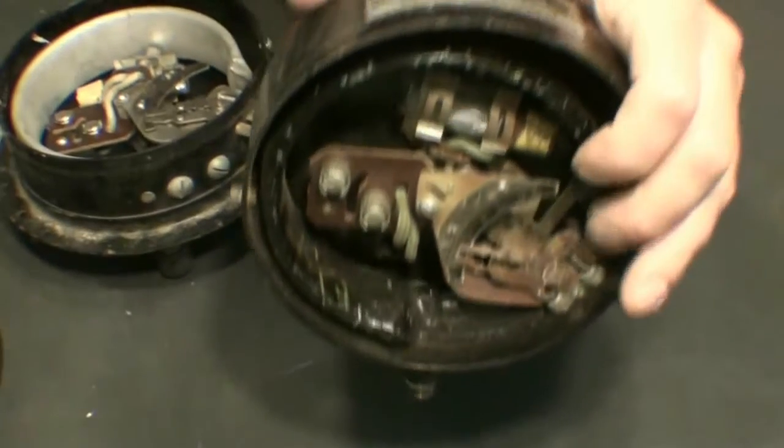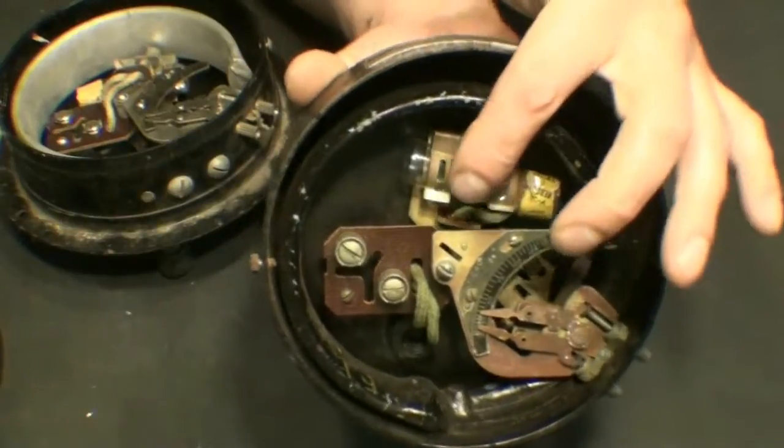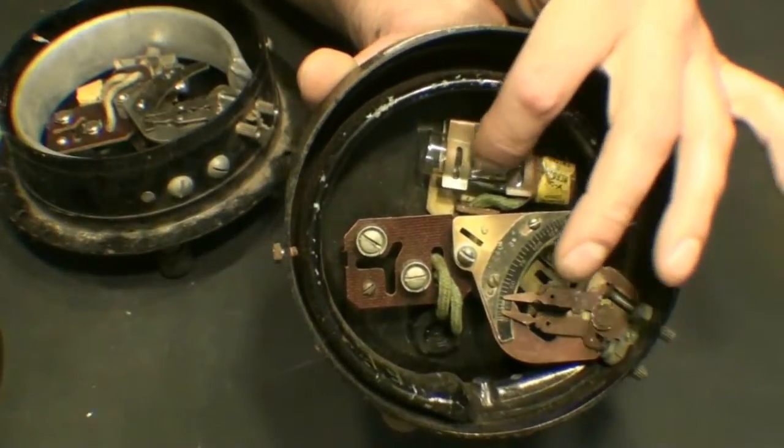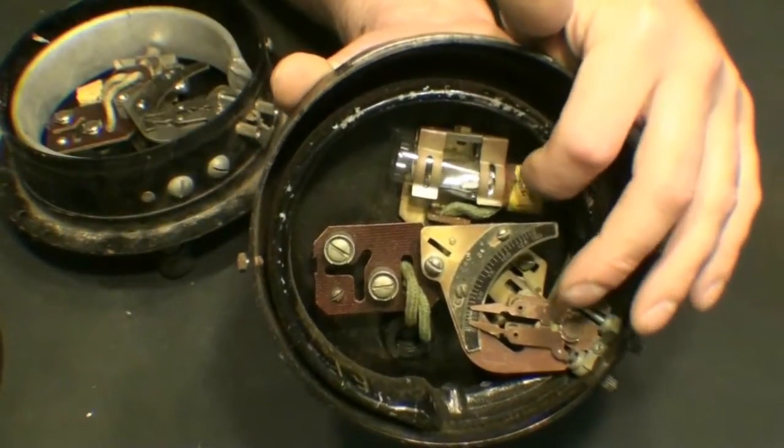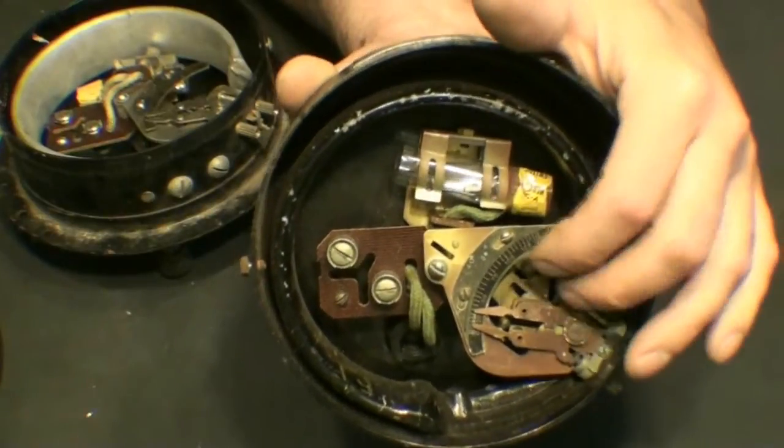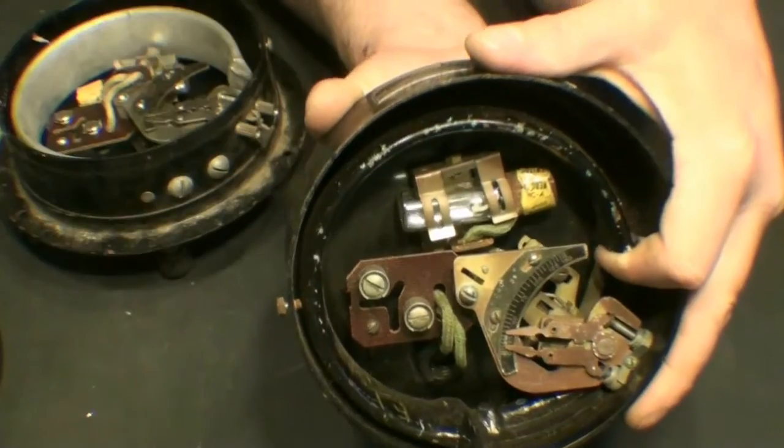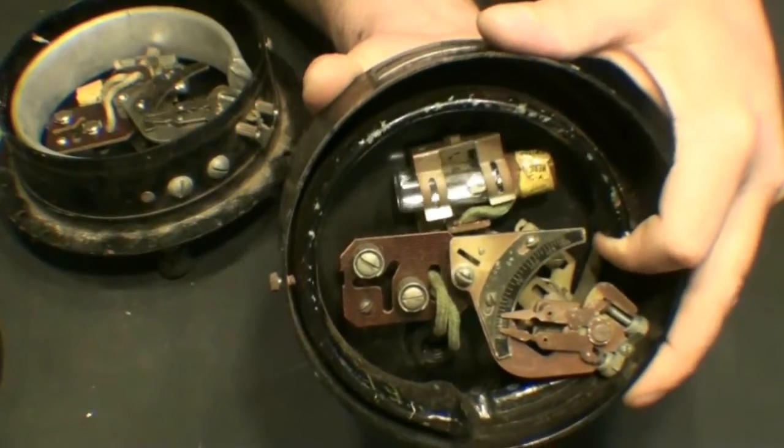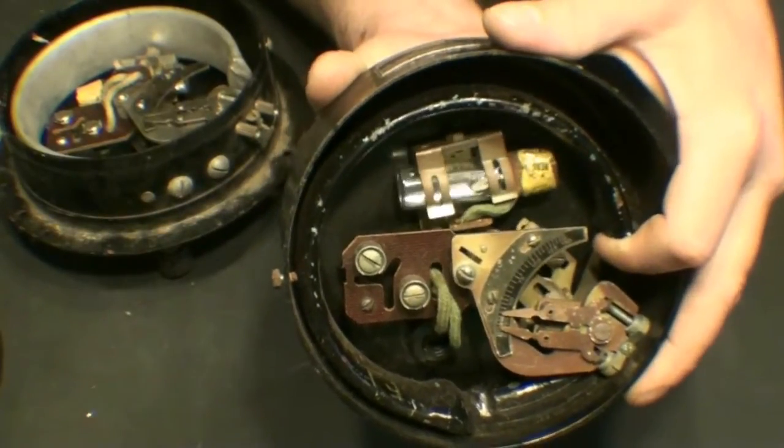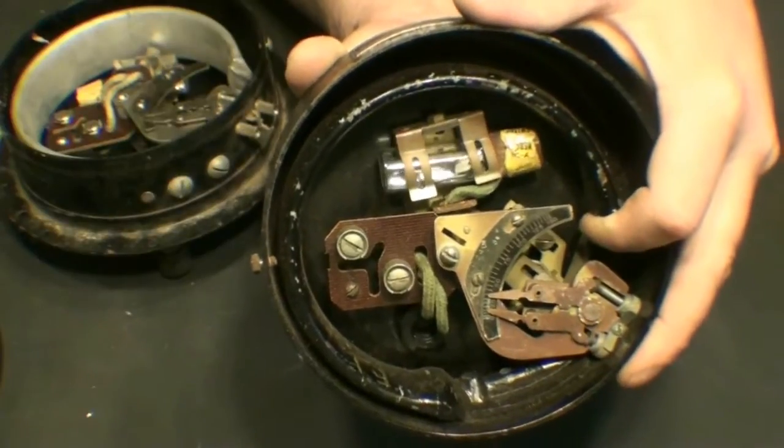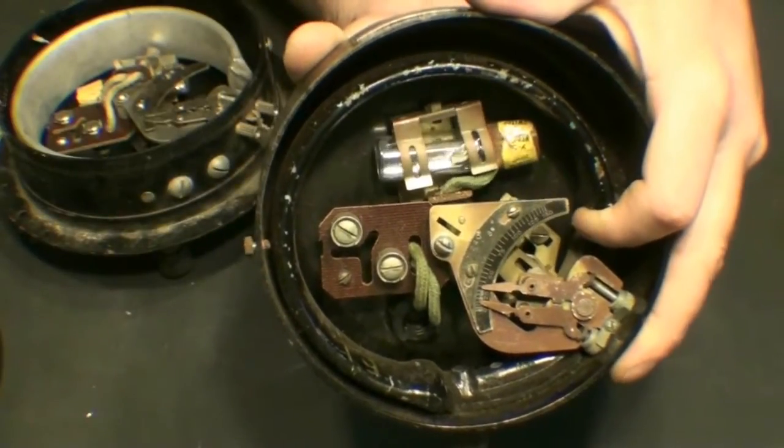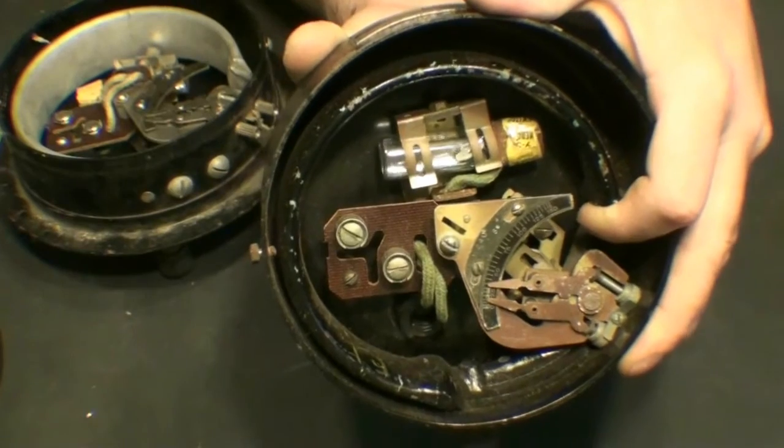How it operates is you have your little glass tube up here with the mercury inside, similar to an old-style thermostat. As the pressure rises, the mechanism tilts that vial of mercury and either makes or breaks the connection.